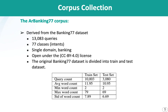The Arabic Banking77 dataset is based on the original Banking77 English data, which contains 13,000 queries, 77 classes or intents, and covers a single domain, which is banking. The original data is divided into train and test, with training data being 10,000 queries and the test set a little over 3,000 queries.